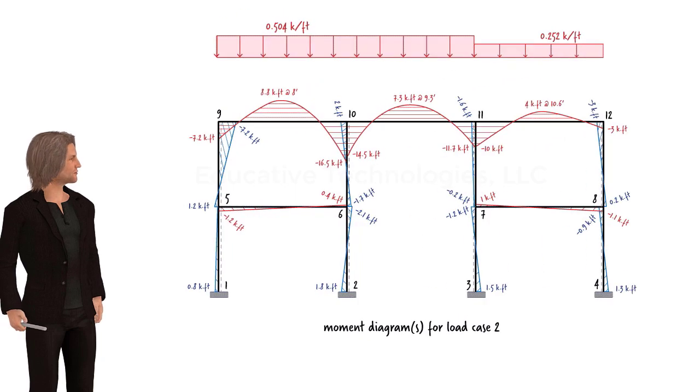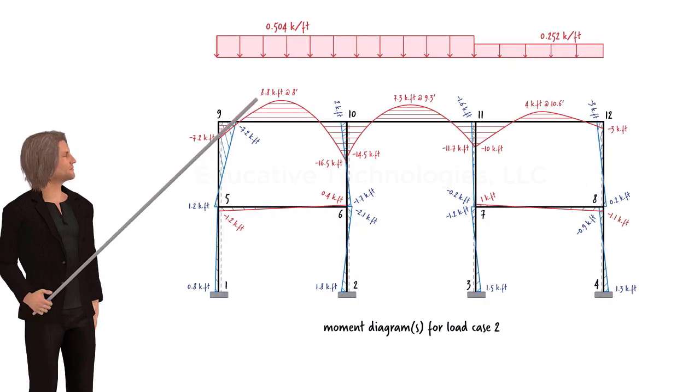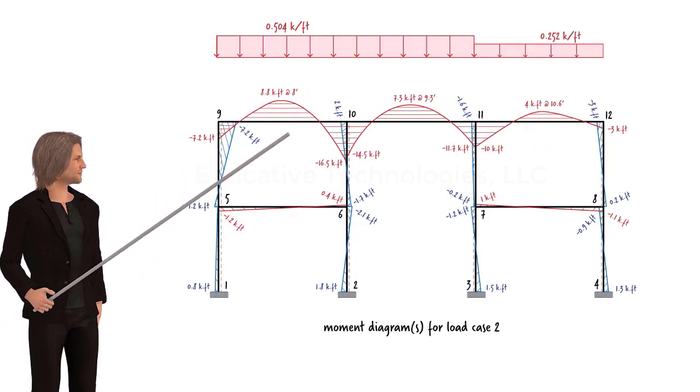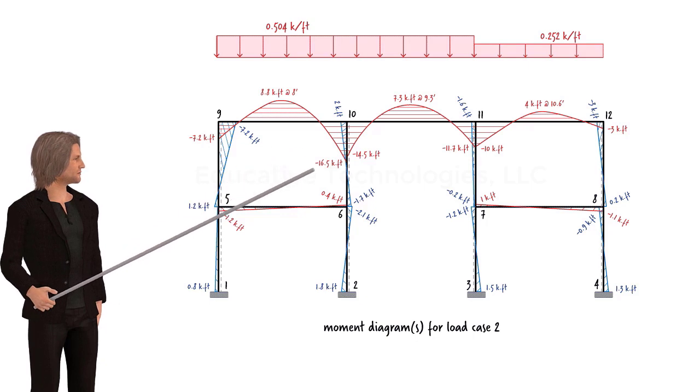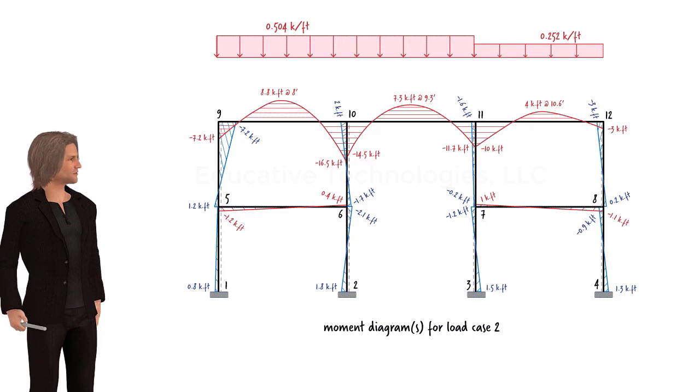Under loading case 2, the positive moment has dropped down to 8.8, while the negative moment has reached its most critical value, negative 16.5. As you can see, the moment values in a typical member fluctuate as the snow pattern on the roof changes.